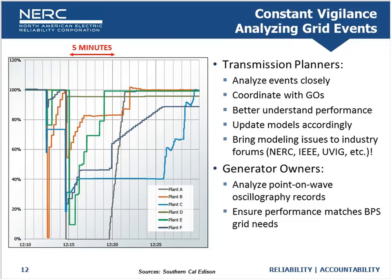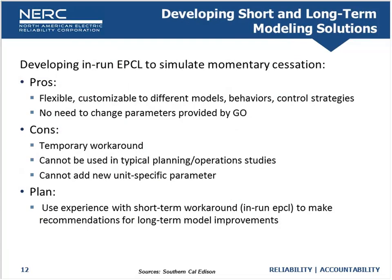We're trying to understand the underlying issues causing plants to trip, partially trip, use momentary cessation, or use partial momentary cessation — and why those are not being represented in the models. If you apply these same faults with the models we have today, you'll see a blip and a flat line and then a blip and a flat line. We wouldn't be capturing any of these types of things. So we have a gap and we need to figure out how to address it.